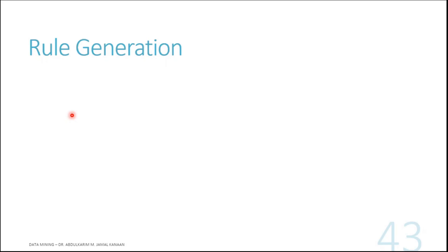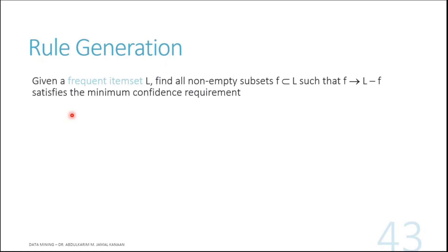Now we move on to rule generation. Rule generation must be done only on the frequent itemset — after we come up with the frequent itemsets, only then can we use the frequent ones to generate rules. This is the idea of association analysis in general. Apriori was used just to reduce the process of candidate generation to make it faster and more efficient, but now we have F3 and we move into rule generation.